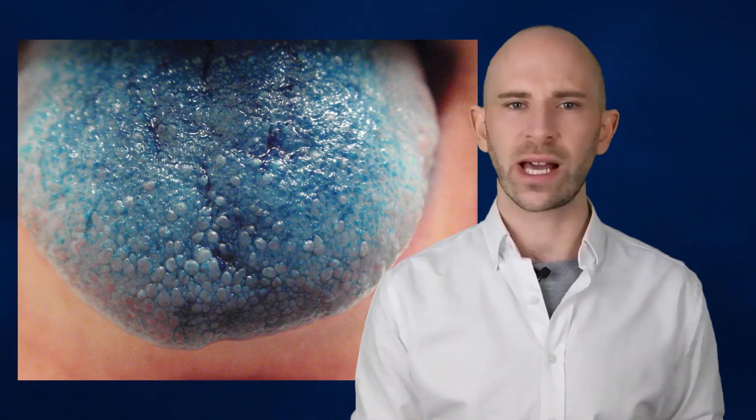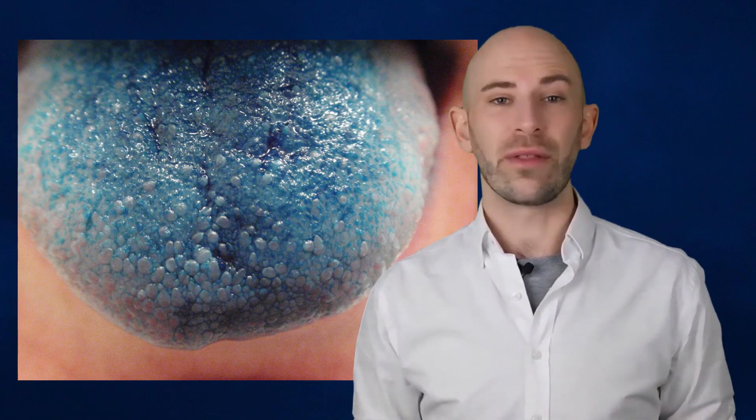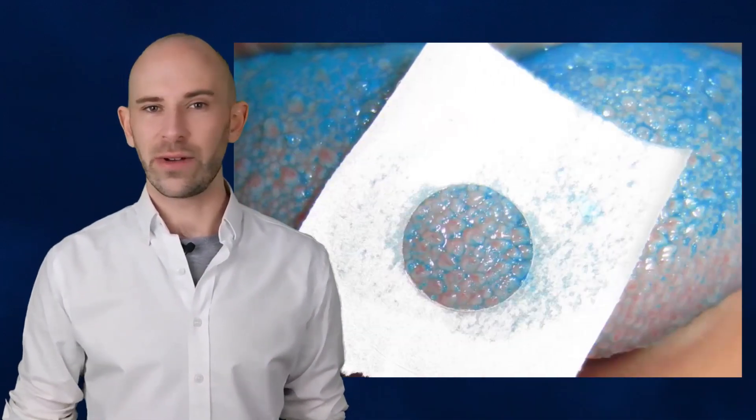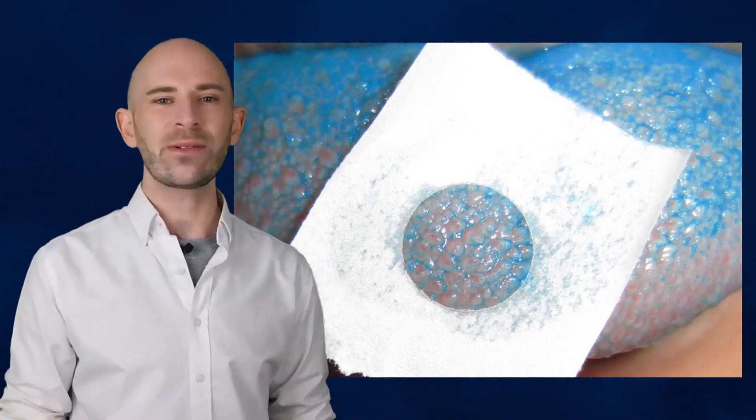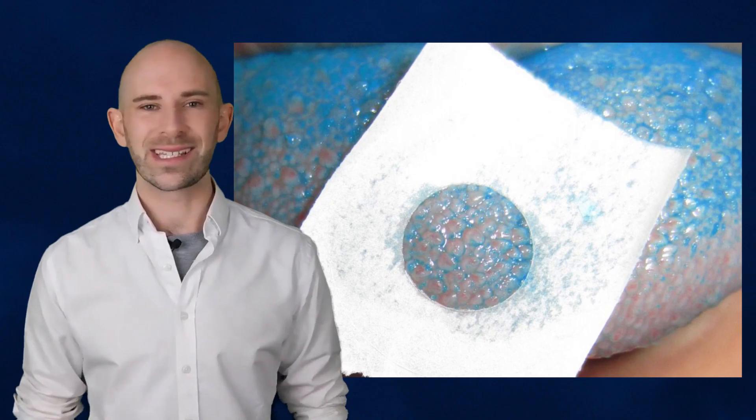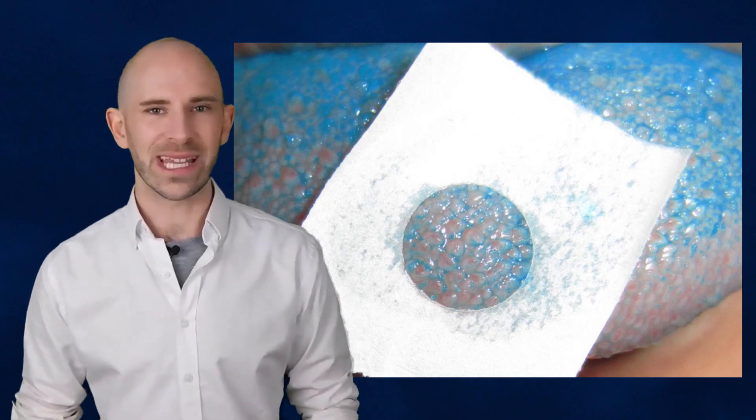You can test to see if you're a supertaster by placing a drop of blue food coloring on the tip of your tongue. Rinse your mouth out and make sure it's dry. Then place a wax ring or binder-enforcer ring on the blue dot and count up any papillae. If you have more than 30 inside this ring, you're probably a supertaster.